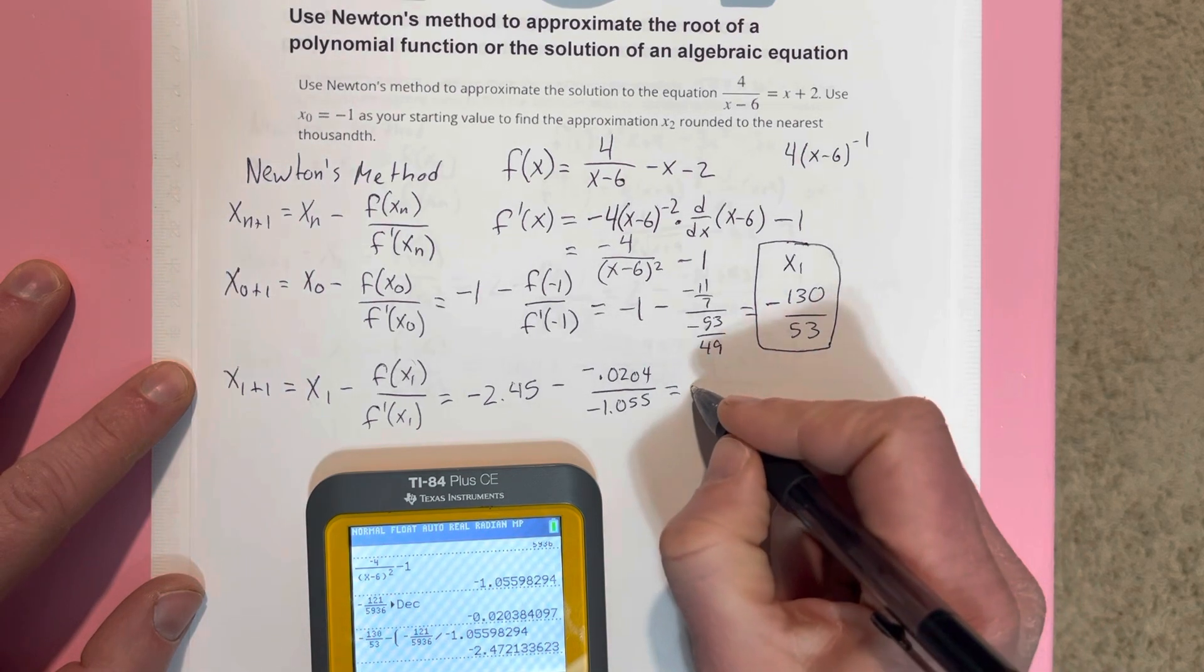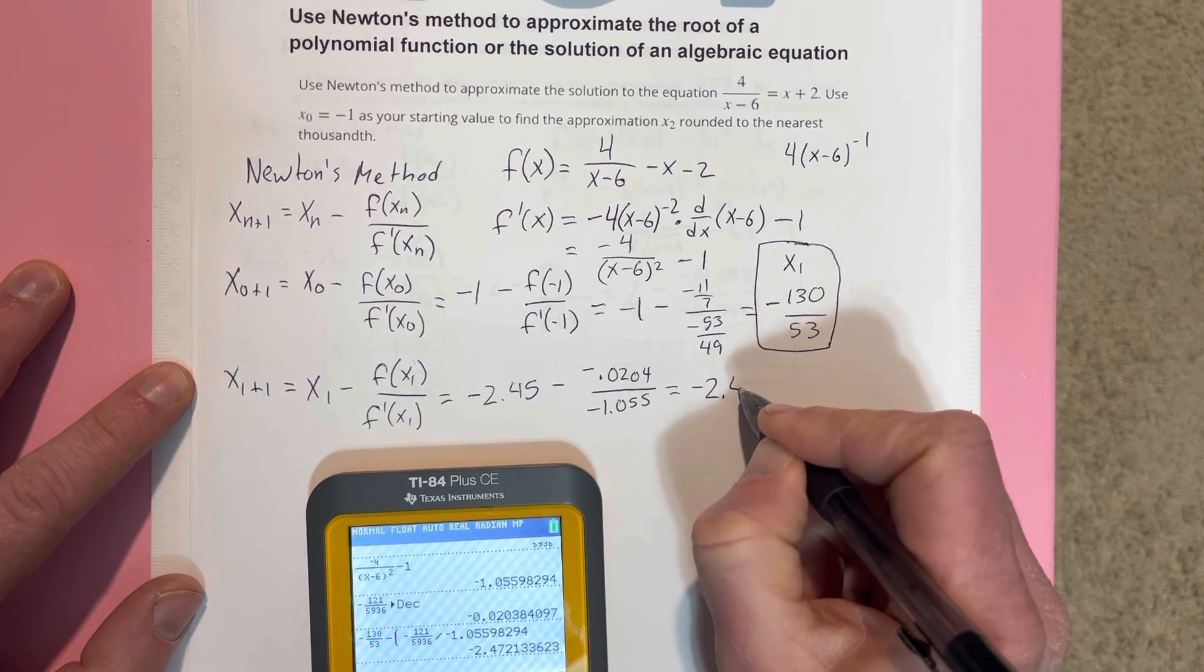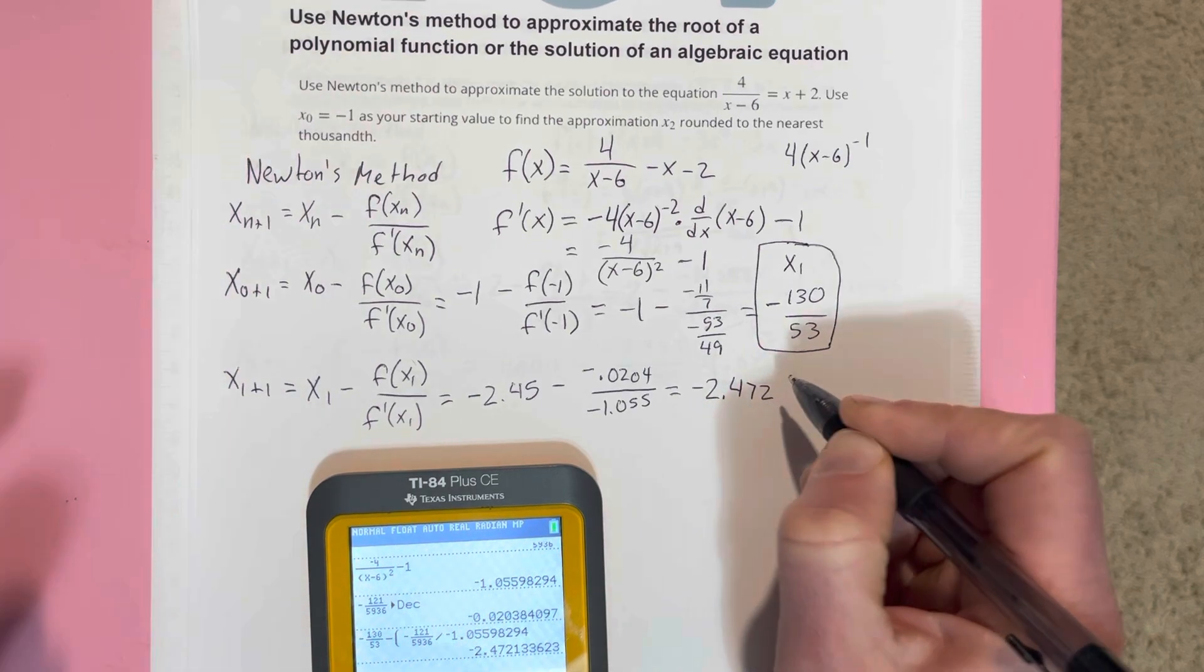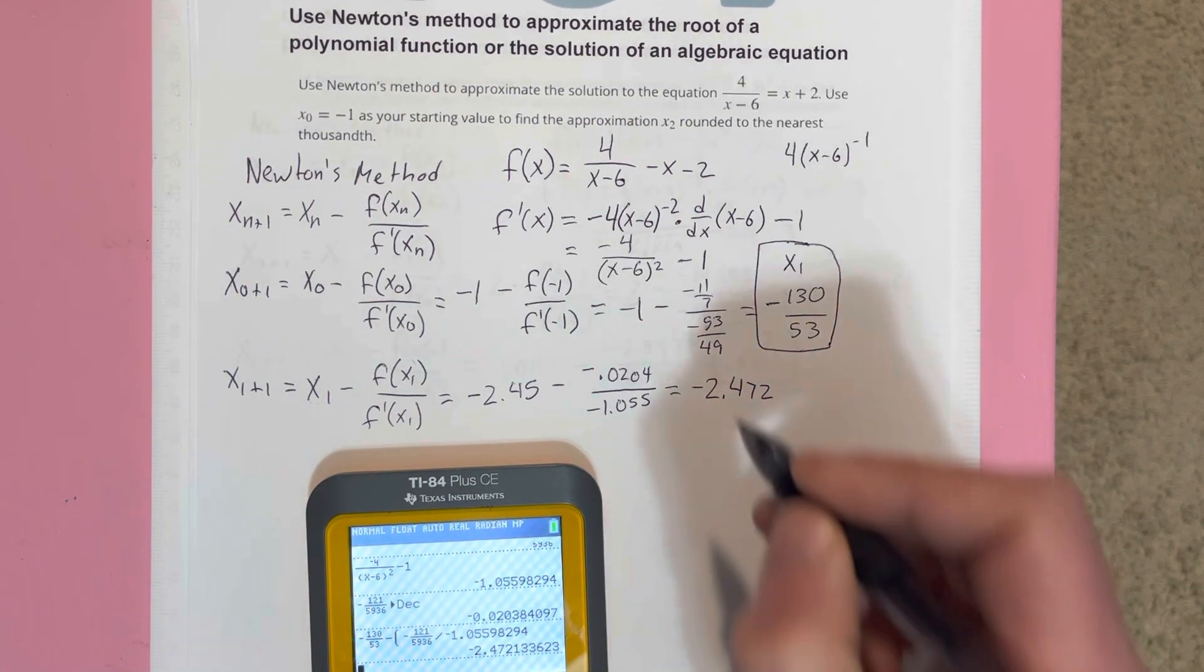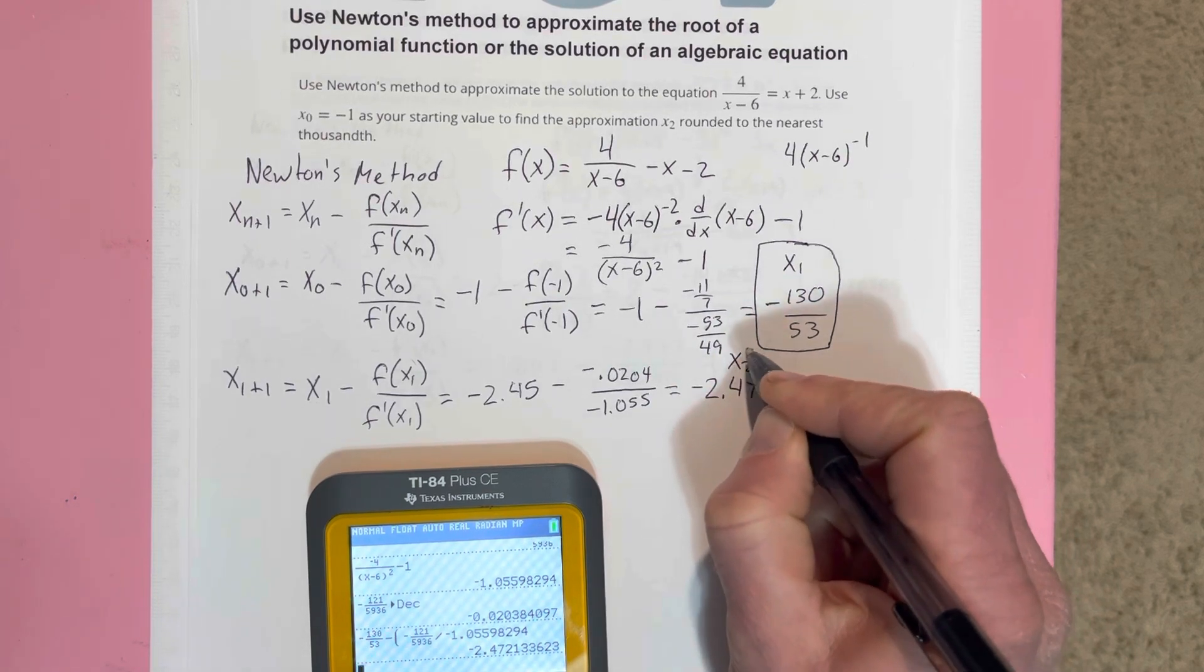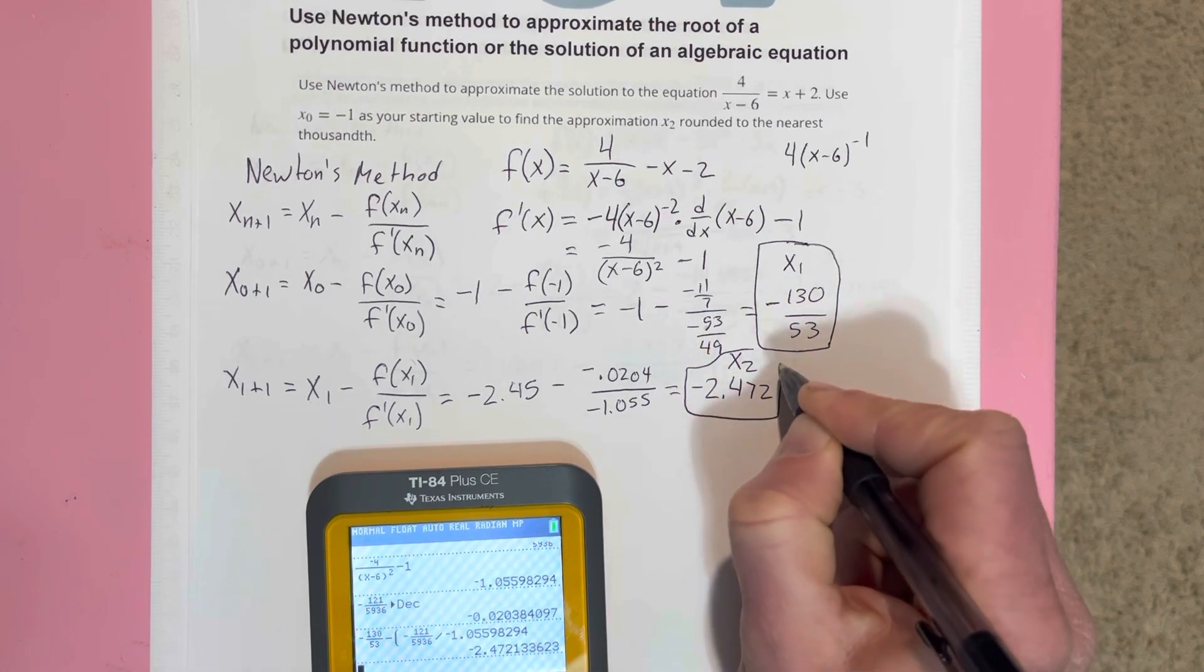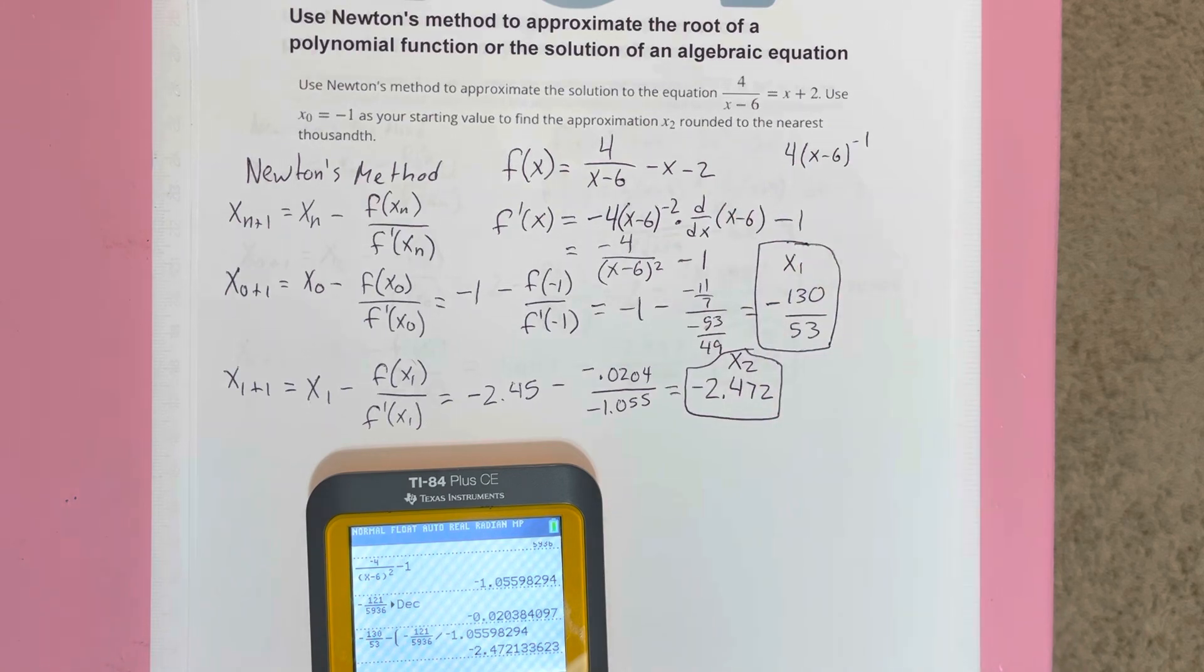And we get negative 2.472. And that's going to be x₂, which is what they were asking us to find. That is the approximation for the solution for that equation.